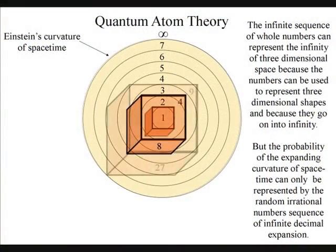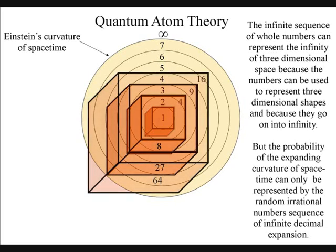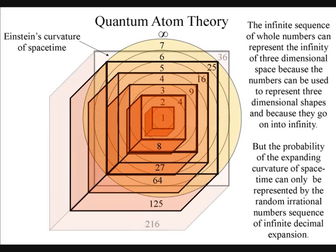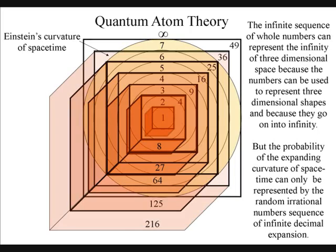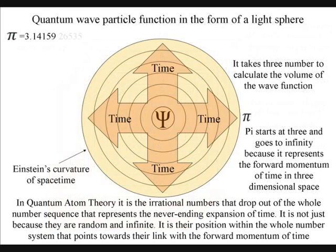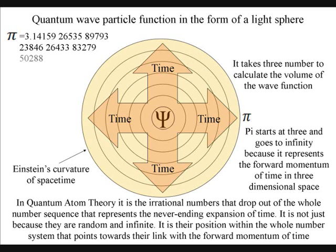It is easy to see how our infinite sequence of whole numbers can represent the infinity of three-dimensional space, because the numbers can be used to represent three-dimensional shapes. But in quantum atom theory, it is the irrational number pi that drops out of the whole number sequence that represents the never-ending expansion of time. It is not just because it is random and carries on expanding forever.